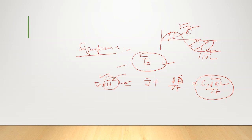So friends, this is about Maxwell's fourth equation and why there was a need to modify Ampere's circuit law. If there is any doubt, please share in the comment section. Thank you.